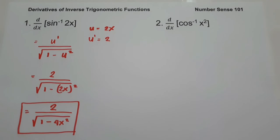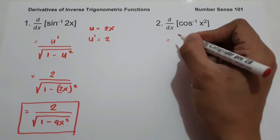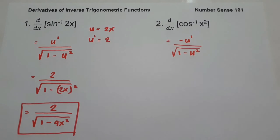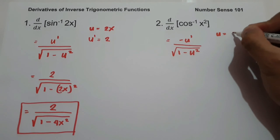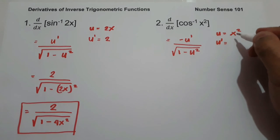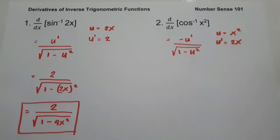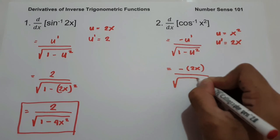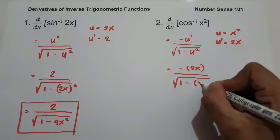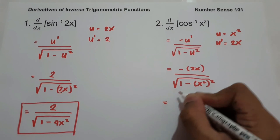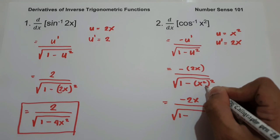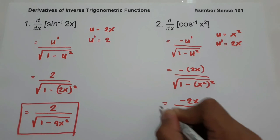On number 2, what is the derivative of arccos x squared? The derivative of arccos u is negative u prime over the square root of 1 minus u squared. So let us have the value of u, that is x squared, and u prime, that is 2x. We have negative 2x over the square root of 1 minus x squared raised to 2, that is x raised to the fourth. And this will be our answer.